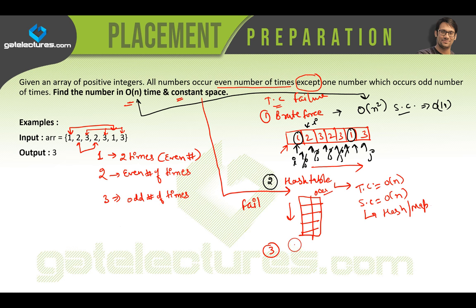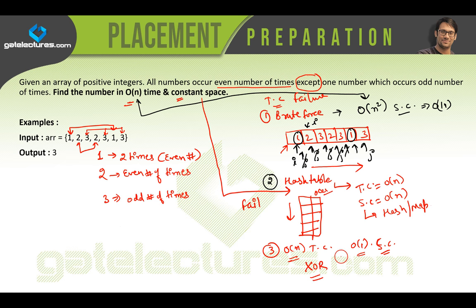The third solution we need should take O(n) time and O(1) space. For this, I am going to use XOR — we are going to take the XOR of the elements. I will first explain how the brute force technique works and how to write a program for it, then how hash tables work and how to write that program, and then how the XOR solution works. So let us start.